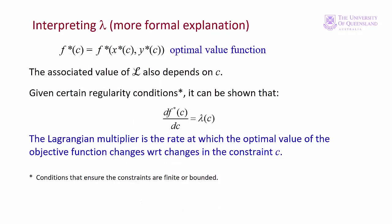We've established that the optimal value function is a function of c, and there's also an associated Lagrangian that depends on c. Given that Lagrangian plus some regularity conditions — conditions that ensure the constraints are finite and bounded — it can be shown that the first derivative of the optimal value function with respect to c is equal to λ(c), since lambda is also a function of c. In other words, the Lagrange multiplier is the rate at which the optimal value of the objective function changes with respect to changes in the constraint c.